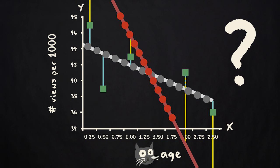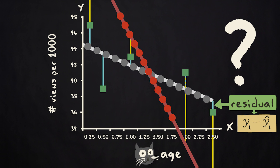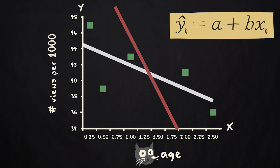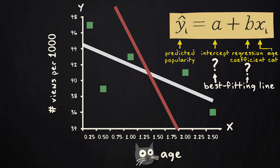The difference between the observed and predicted score for each case is called a residual or prediction error. It's expressed as y sub i minus y hat sub i for case i. Earlier we saw that the general form of the equation is y hat sub i equals a plus b times x sub i. The predicted popularity score equals the intercept plus the regression coefficient times the age of the cat. So what values for the intercept and regression coefficient produce the best fitting line that minimizes the residuals?